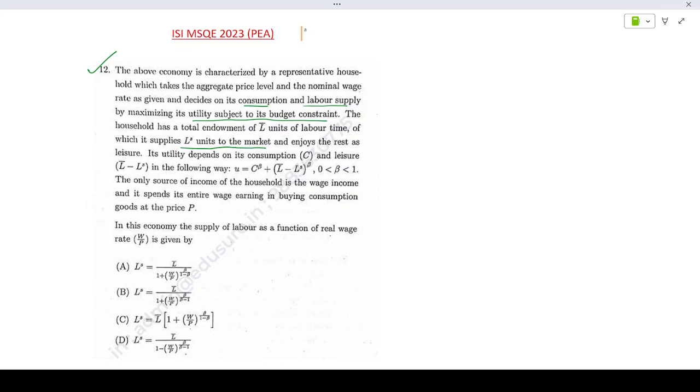Its utility depends upon consumption C and leisure L bar minus LS in the following manner where beta lies between 0 and 1. The only source of income for the household is the wage income and it spends its entire income in buying consumption good at a price P. Then in this economy, the supply of labor as a function of real wage is given by what?